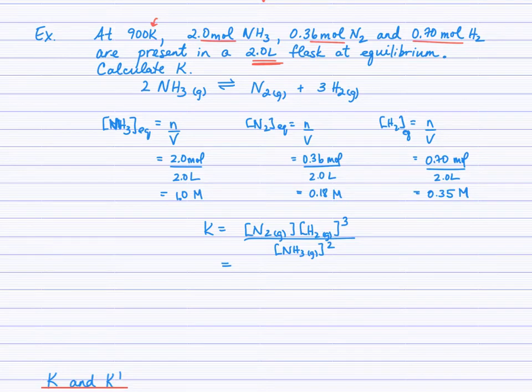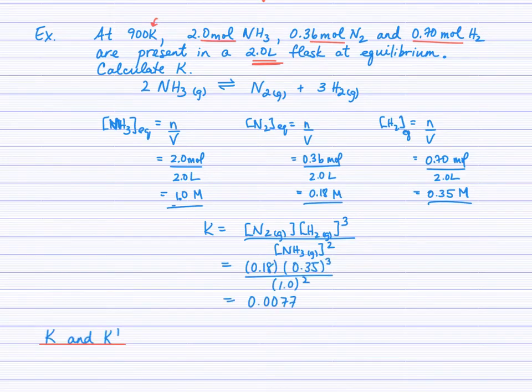You'll notice I did products over reactants and raised the concentrations to the exponents equivalent to their balancing coefficients. Now we substitute the equilibrium concentrations that we calculated here and then calculate K. So K in this case equals 0.0077.